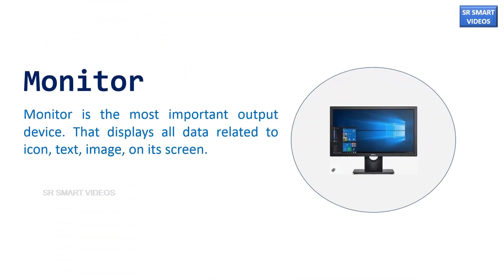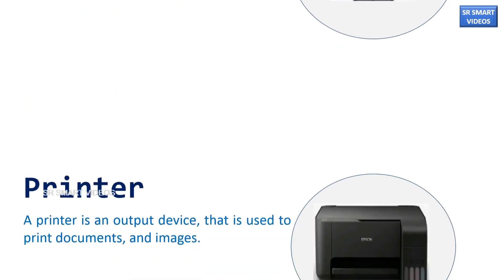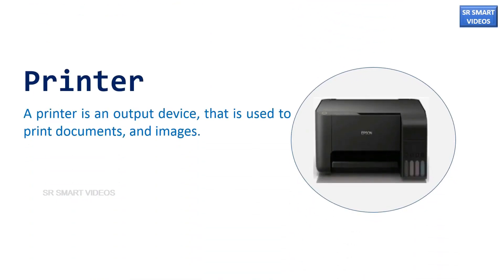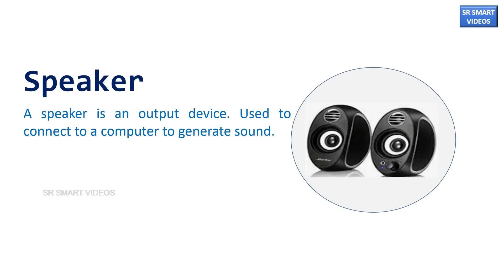Monitor is the most important output device that displays all data related to icons, text, and images on its screen. A printer is an output device that is used to print documents and images. A speaker is an output device used to connect to a computer to generate sound.